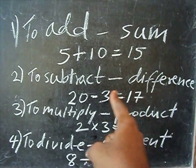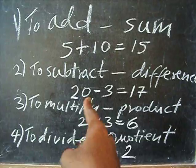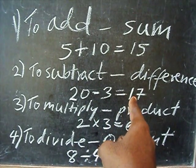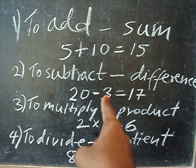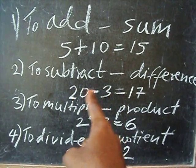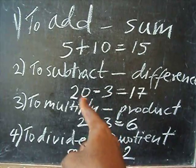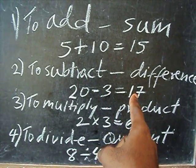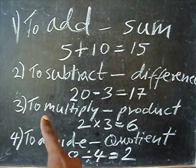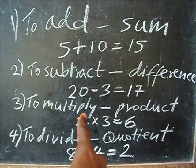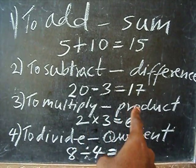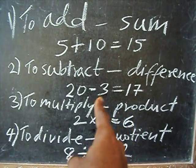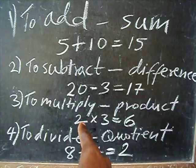3 from 20 is equal to 17. To find the difference between these two numbers, you're supposed to subtract. The result is equal to 17. To multiply is to find the product of two numbers.